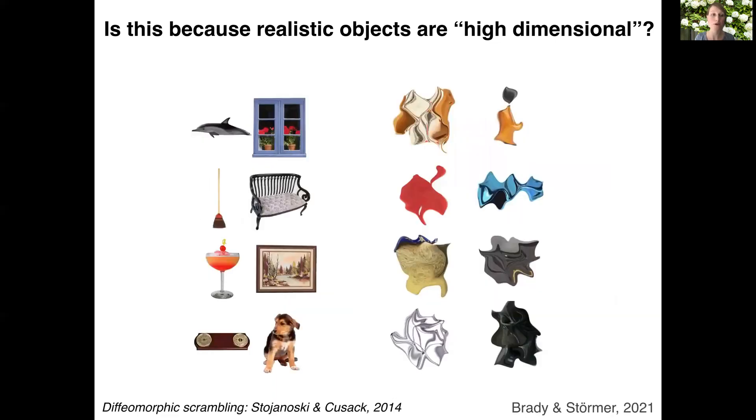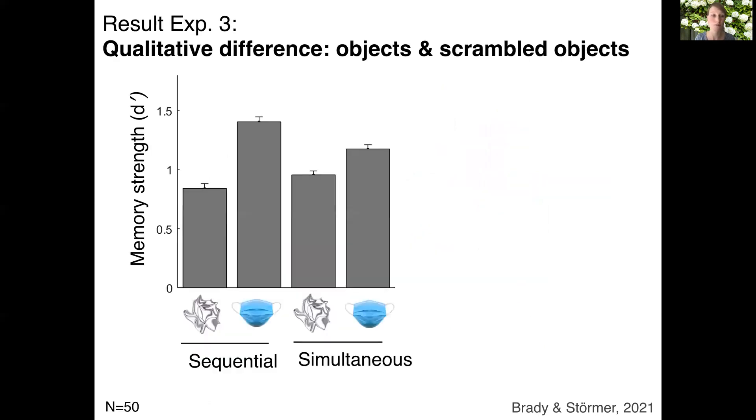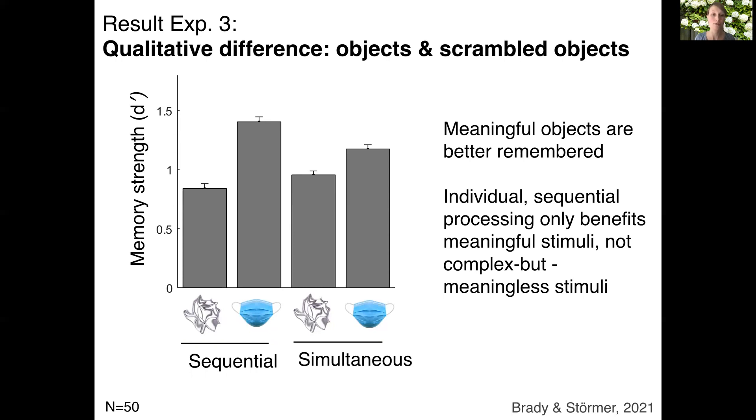And so in the third experiment, we compared memory performance for realistic objects and scrambled versions of these objects, which maintained the physical complexity of the objects but were unrecognizable and thus meaningless to the observer. What we found was that intact objects are again better remembered, replicating the real-world object benefit, and that this benefit is larger for sequential encoding. The scrambled objects look like colors, overall performance is lower, and memory is better for simultaneous than sequential encoding. So this suggests that individual sequential processing only benefits meaningful stimuli, but not complex, meaningless stimuli.